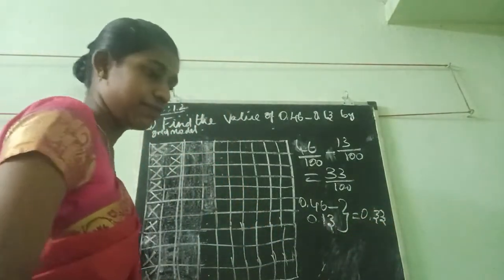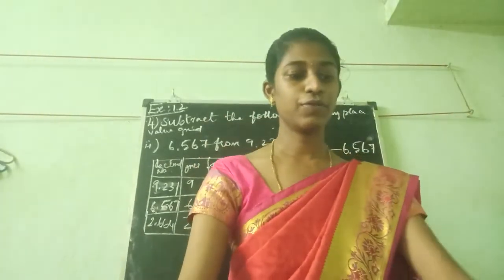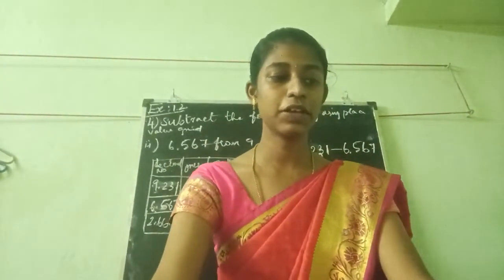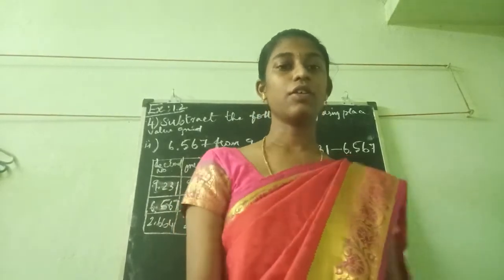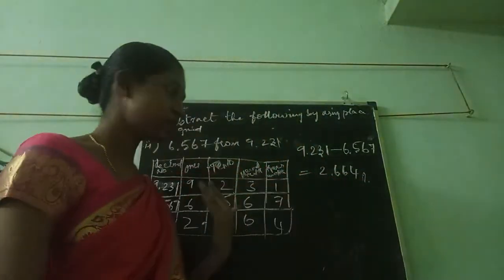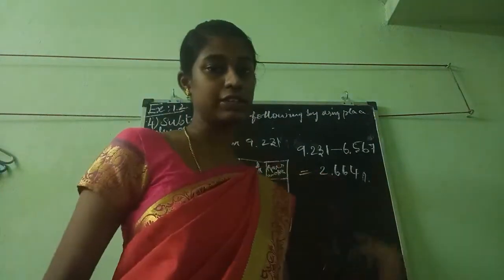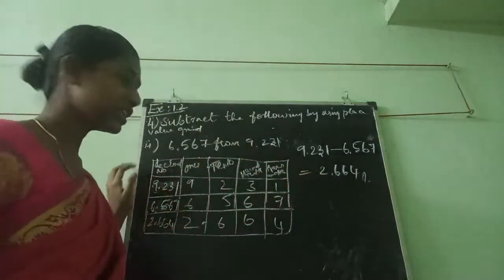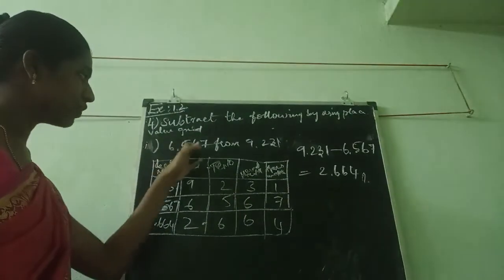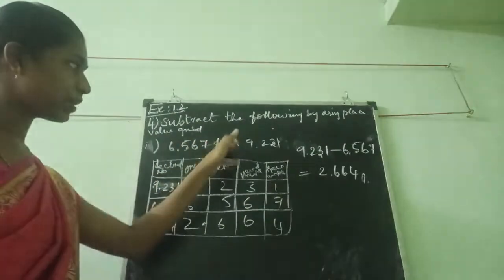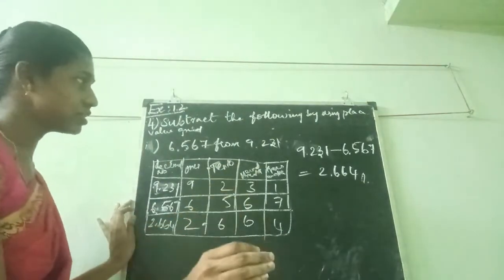Now we are going to see about the next sum — the fourth sum: subtract the following by using place value grip. Now we are going to see about place value. Place value means already I taught in the addition sum. Like that same, they have given the question: 6.567 from 9.231.